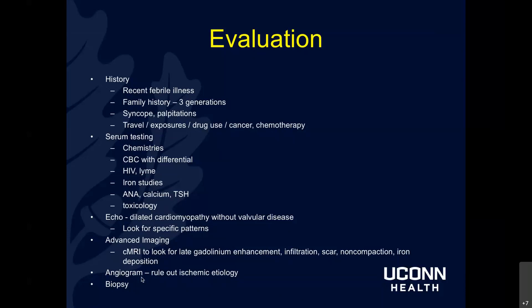For advanced imaging, cardiac MRI with late gadolinium enhancement can be very helpful - telling you about infiltration, scar, inflammation, non-compaction, and even giving an iron score for iron deposition. An angiogram is usually necessary since ischemic heart disease is the most common cause of heart failure, so you always want to rule that out first. Biopsy has very narrow indications - most often for someone presenting with fulminant myocarditis where you're looking for giant cell myocarditis, which is steroid-responsive and life-saving.